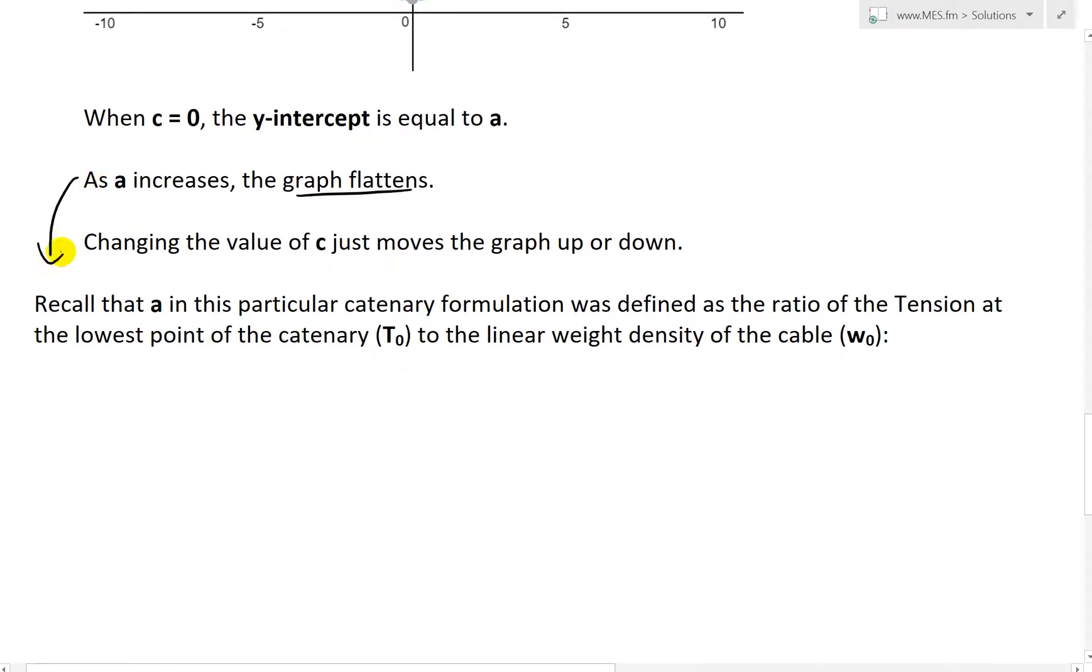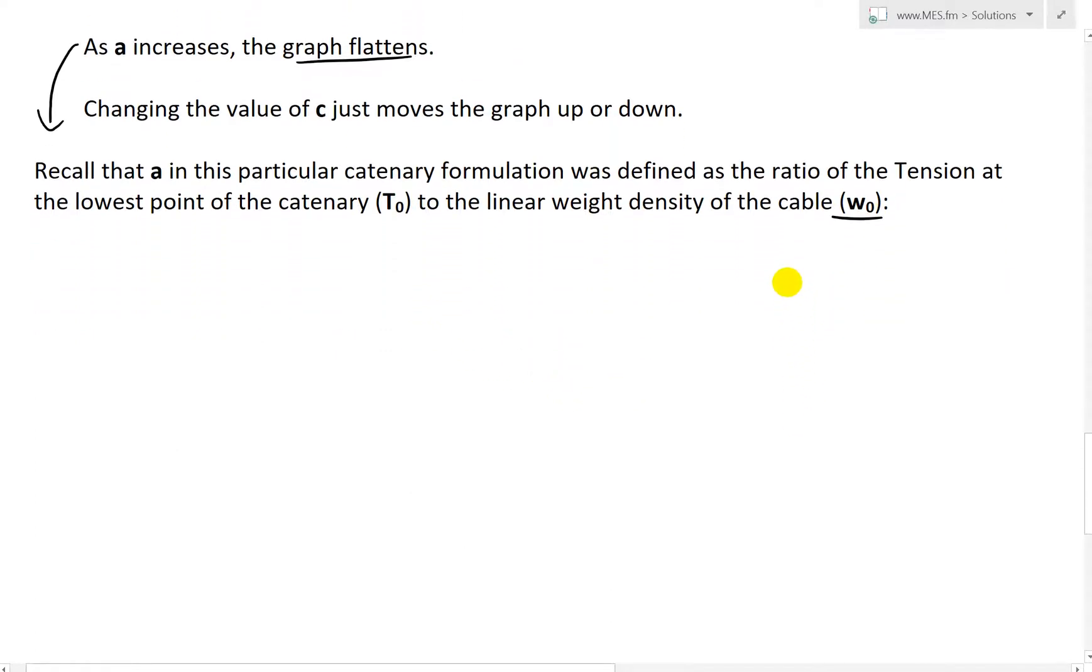And now I just want to illustrate further on this A increases, the graph flattens. Well, recall that A in this particular catenary formulation, as I showed in my earlier video, was defined as the ratio of the tension at the lowest point of the catenary T0 to the linear weight density of the cable W0, like that.